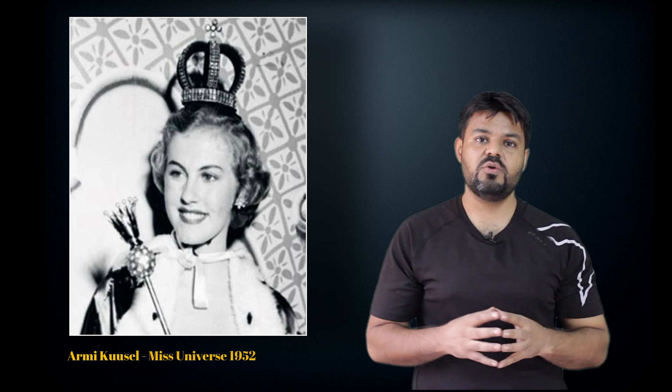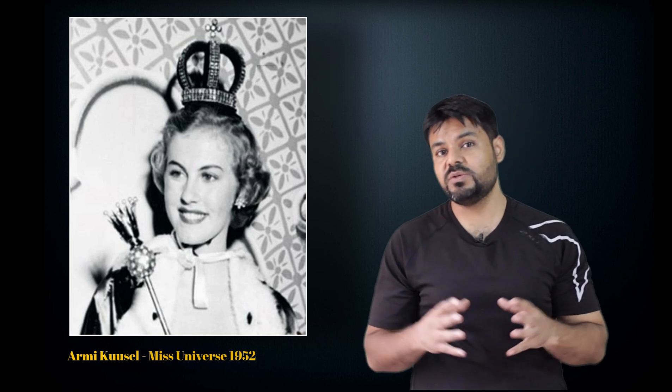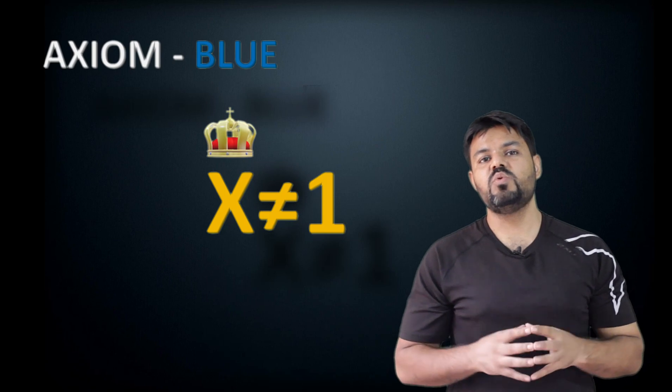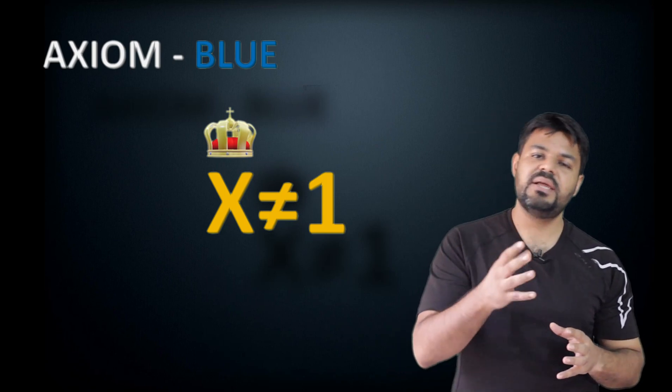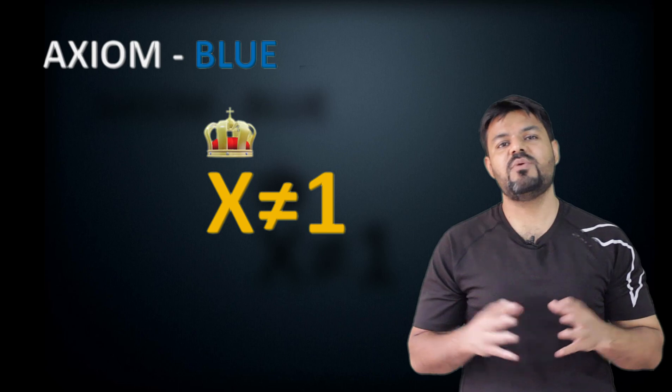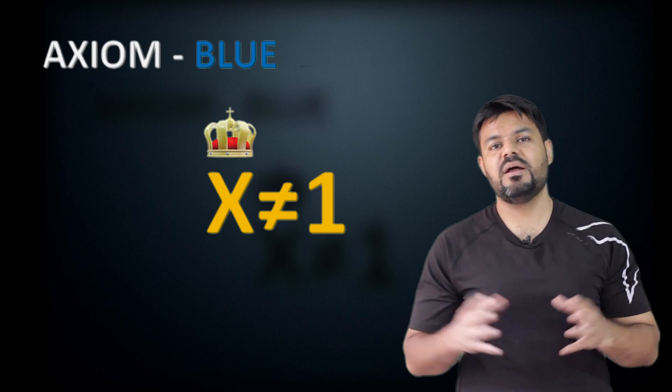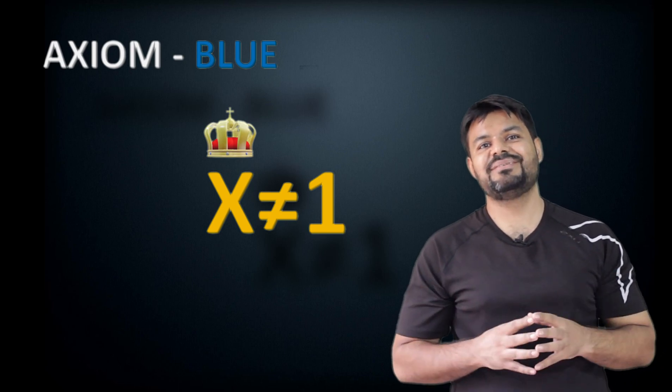Because the pageant started in 1952, the first Miss Universe was Armi Kuusela, and she was not a successor of any prior Miss Universe. This brings us to our next axiom, Axiom Blue, which states that one is not a successor of any natural number. We can say that one is the Armi Kuusela of natural numbers.